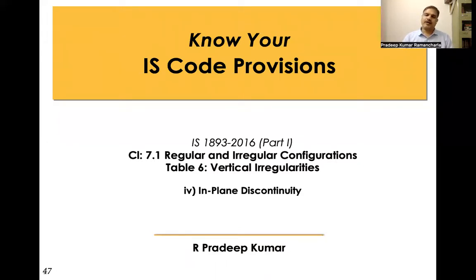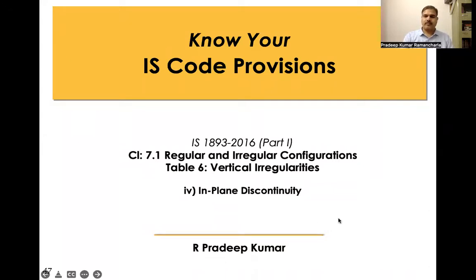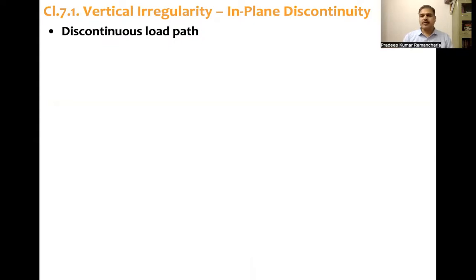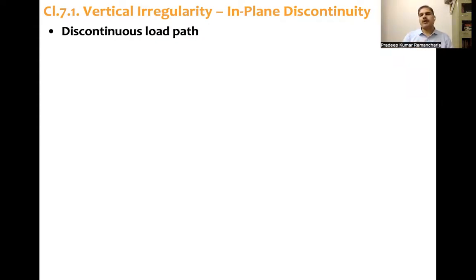Table number six — vertical irregularities — includes in-plane discontinuity. When there is in-plane discontinuity, the earthquake force is the induced force generated at the diaphragm level. The diaphragm feeds that load into vertical resisting elements, usually in the form of moment resisting frames or structural walls. If there is an offset in the load path, it creates a discontinuous load path.